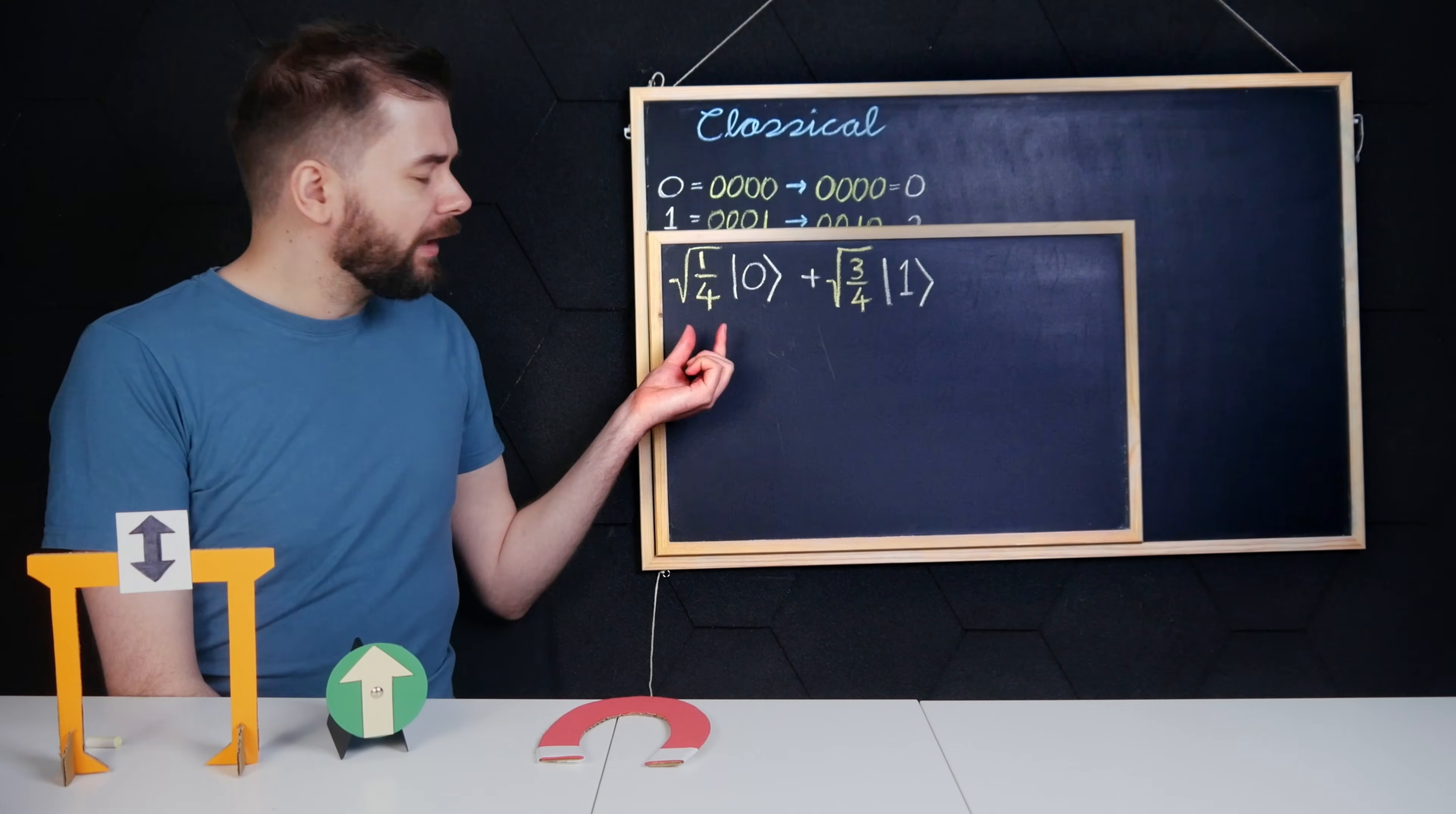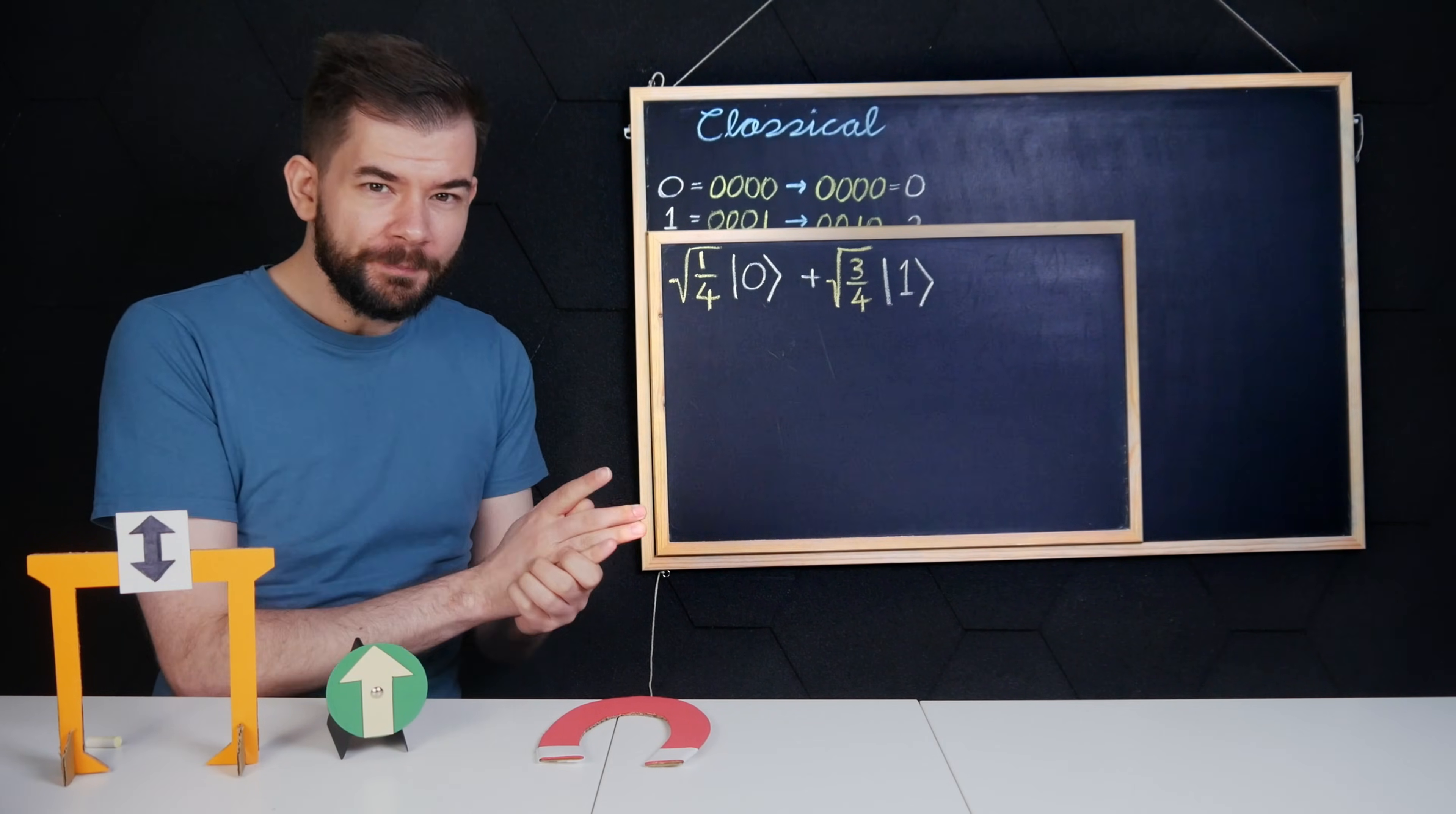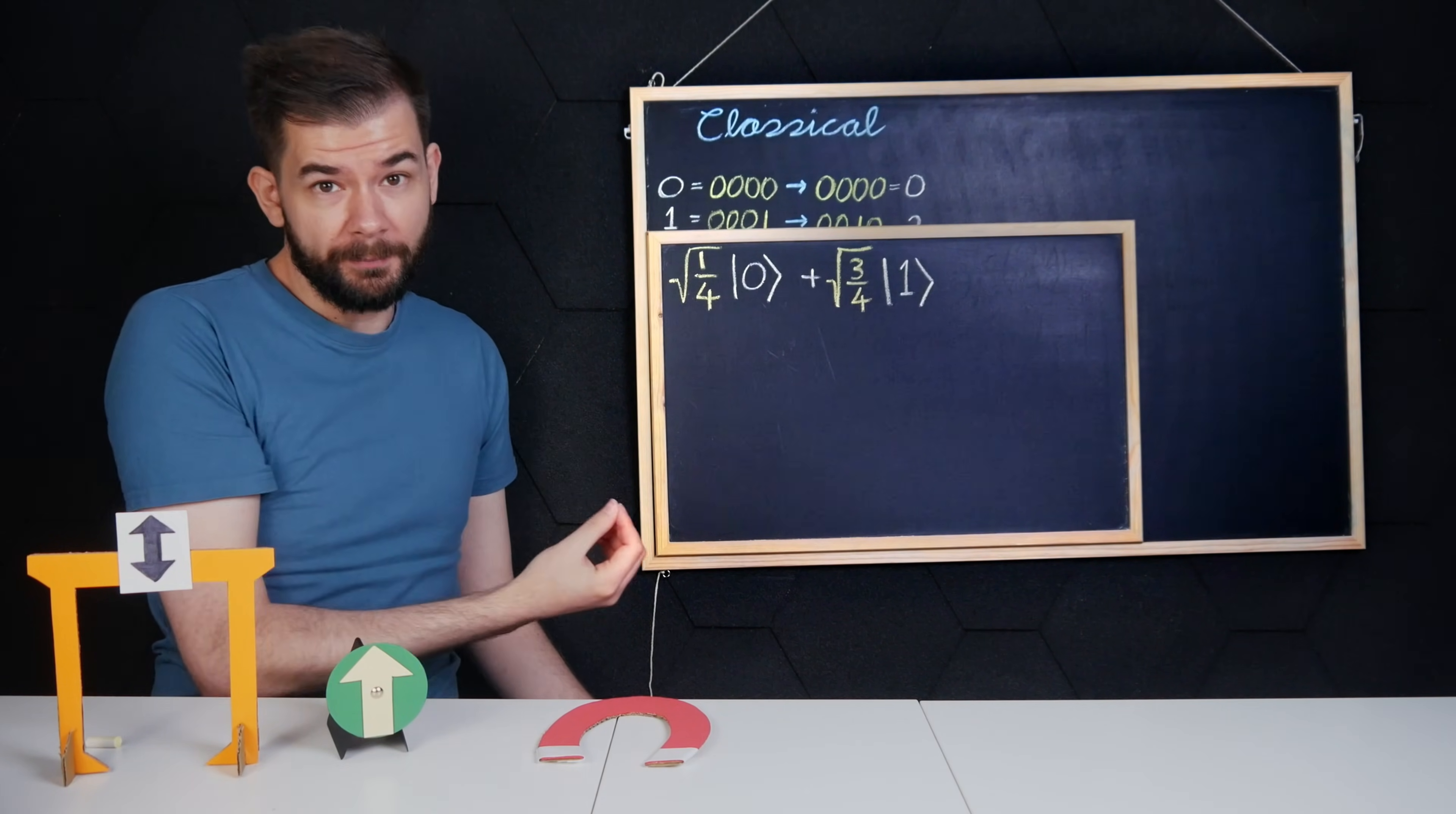Why do we do that? Well, these coefficients encode some physical properties of that qubit that I won't get into. I'll just add that these numbers can also be complex numbers, taking their magnitude and squaring still gets us the probability.